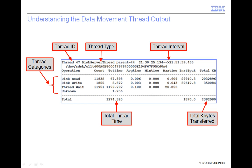The thread interval shows the begin time and end time of the measurements for this thread. The thread categories are the discrete sub-operations that are performed to accomplish the data movement. These are the categories that are counted and timed. The total thread time is the sum in seconds of all the category times.